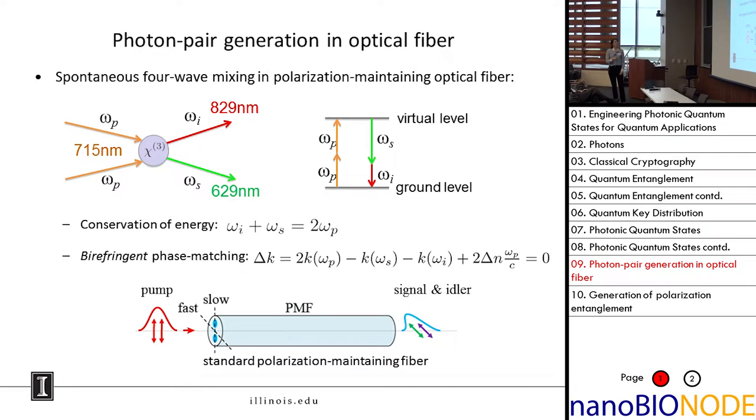For the particular fiber we're using, it's actually birefringent. It has a fast and slow axis of propagation. If you send light polarized along one axis, it's going to go more slowly than along the orthogonal axis. Because of that, we have a very special phase matching condition that ultimately results in a big separation in the wavelengths of the photons you produce compared to the photons you put in.